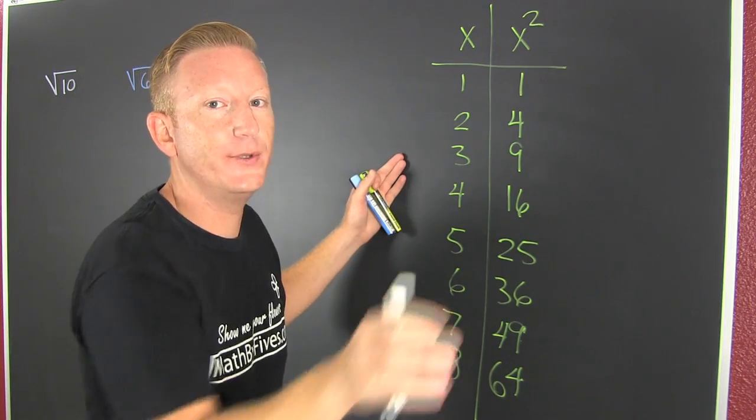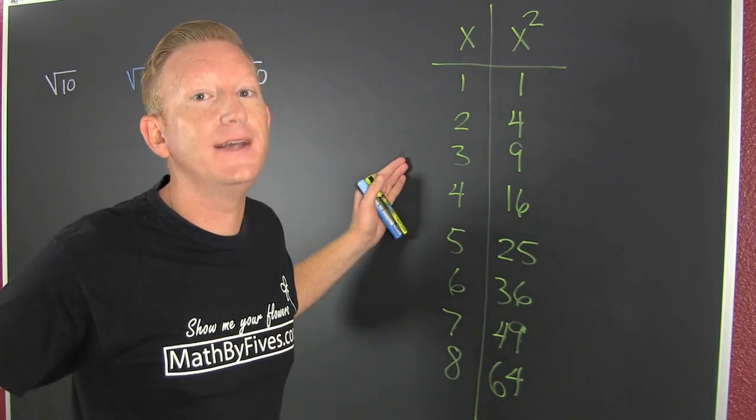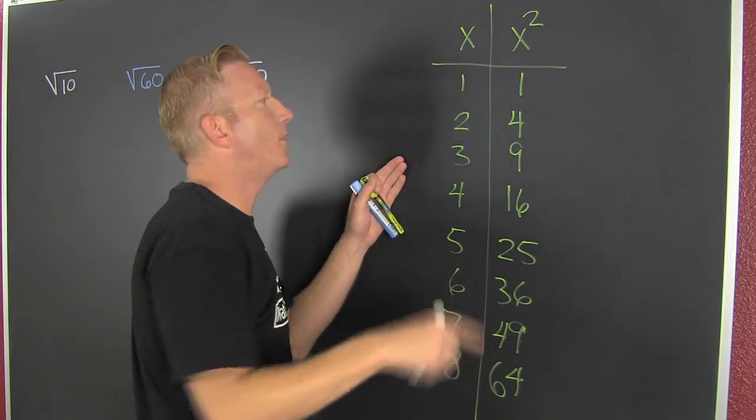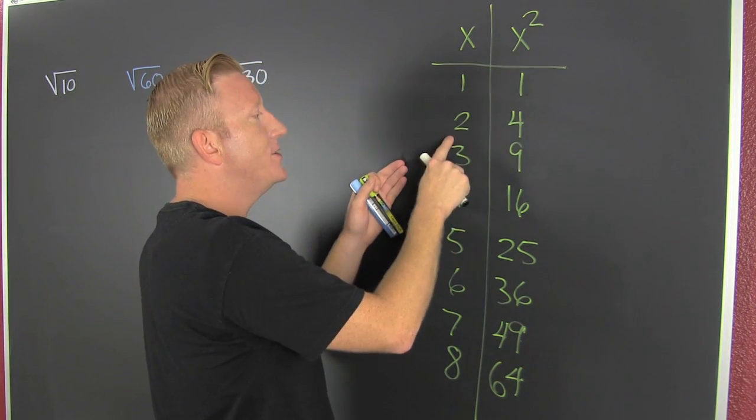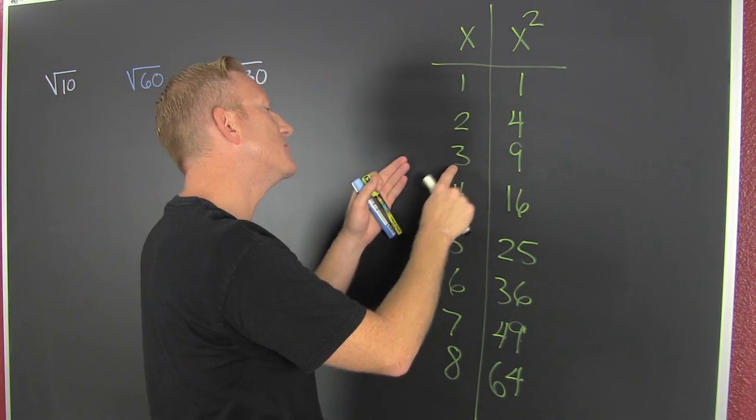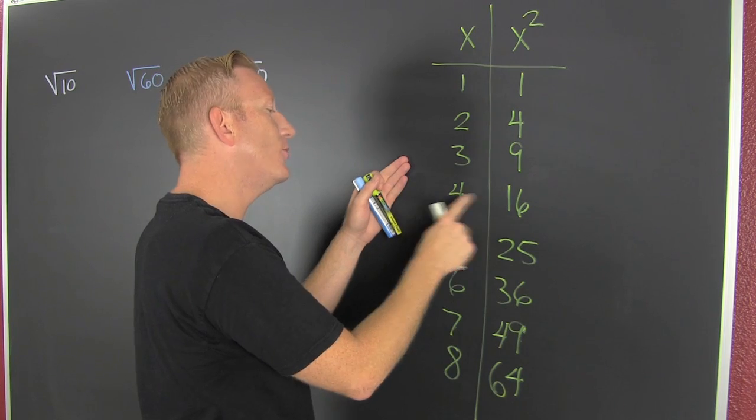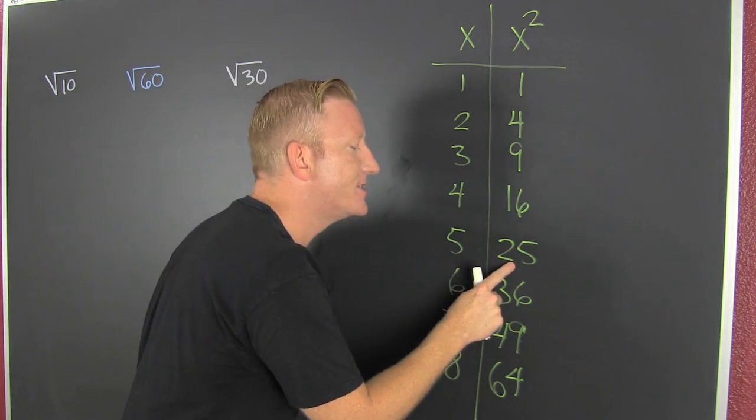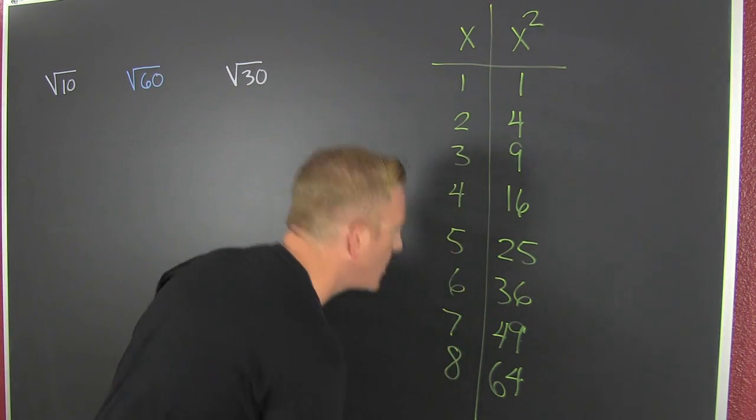As you know, the square root takes the square and puts it back in one dimension. Did I mention 1×1 is 1 and 2×2 is 4 and 3×3 is 9, 4×4 is 16, 5×5 is 25, and so on.